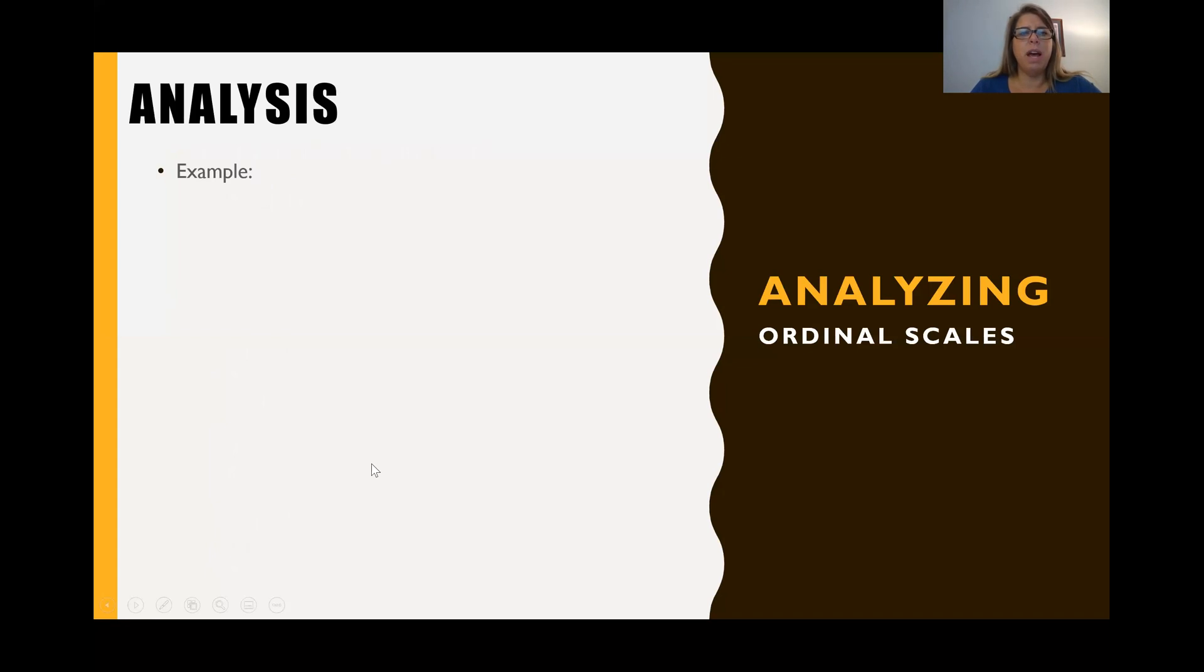And if we do the analysis and we put them in order and we find that one that's in the middle, then we know that our median is two. So you can see we have one, two, three, four, five on this side, one, two, three, four, five on this side. So we know that this is the median.